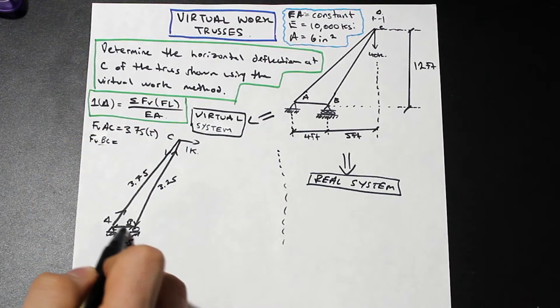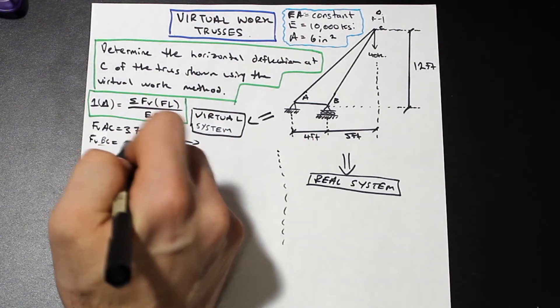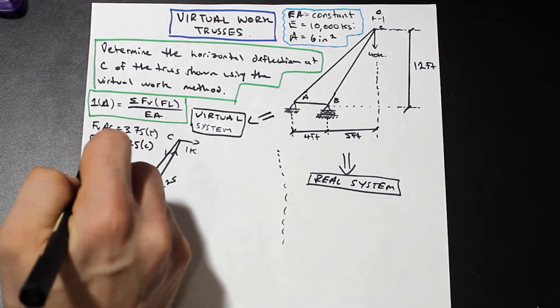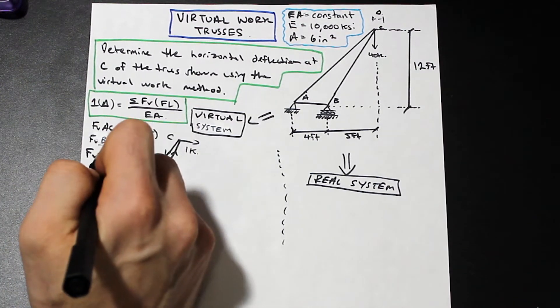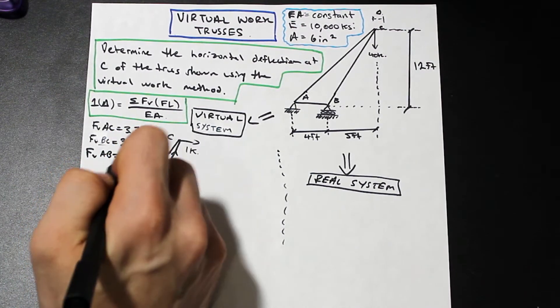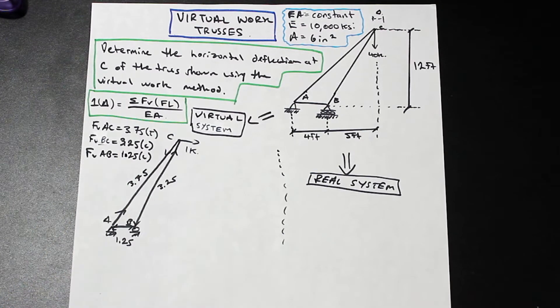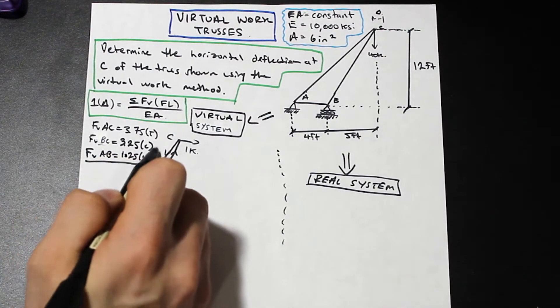For FV of BC we have 3.25 compression. And for FV, the axial force of the virtual system for AB, we have 1.25 compression. So those are our forces for the virtual system.